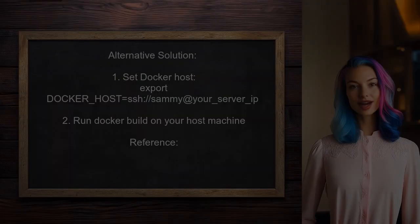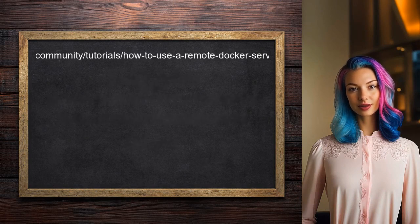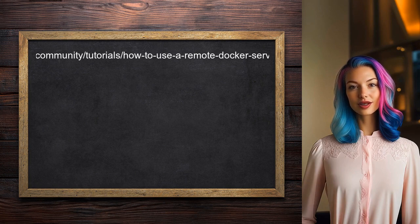An alternative approach involves setting the Docker host to a remote server. You can do this by exporting the Docker host variable with the SSH command. This allows you to run the Docker build command on your host machine.